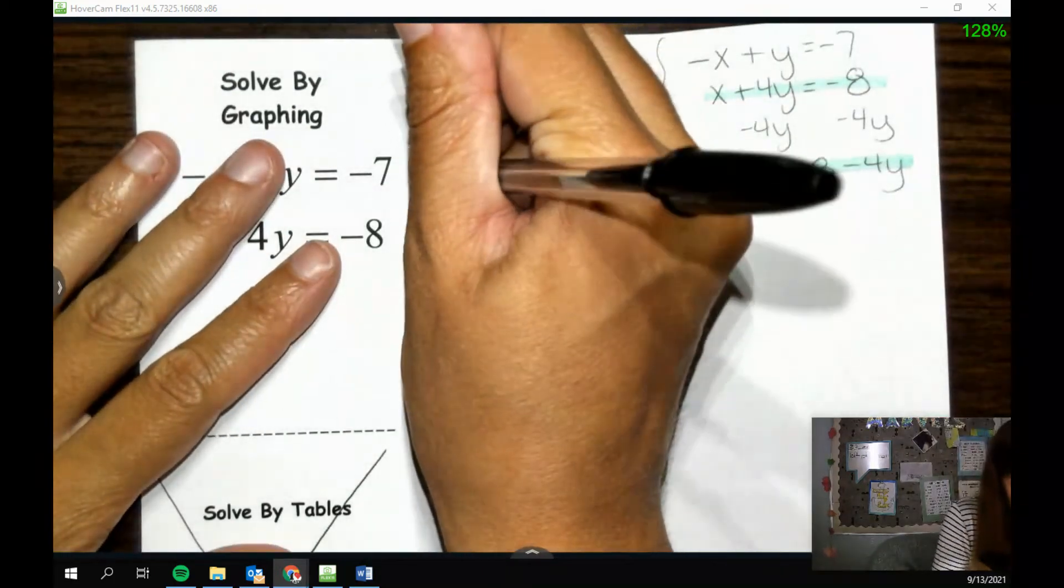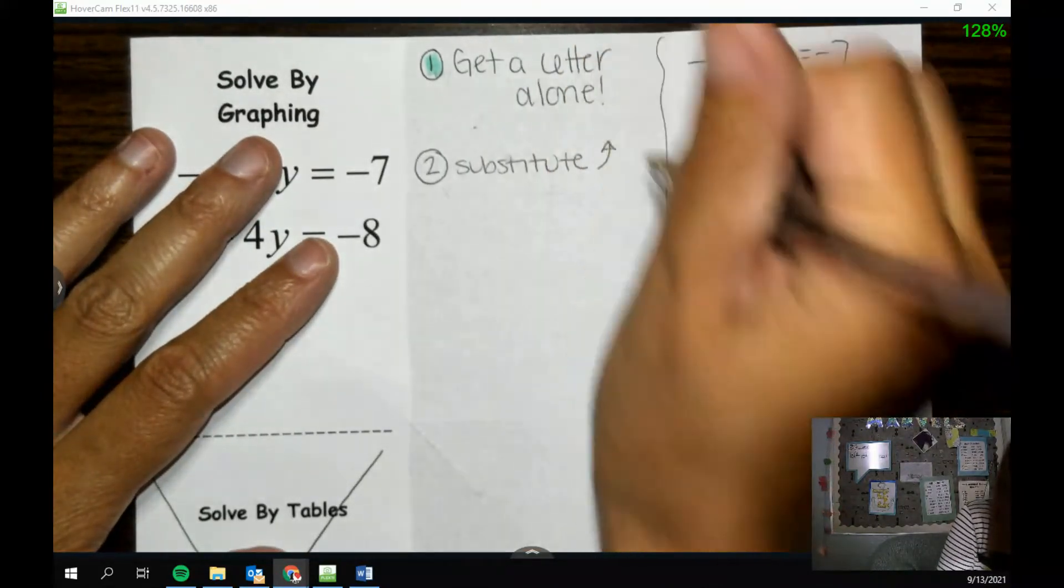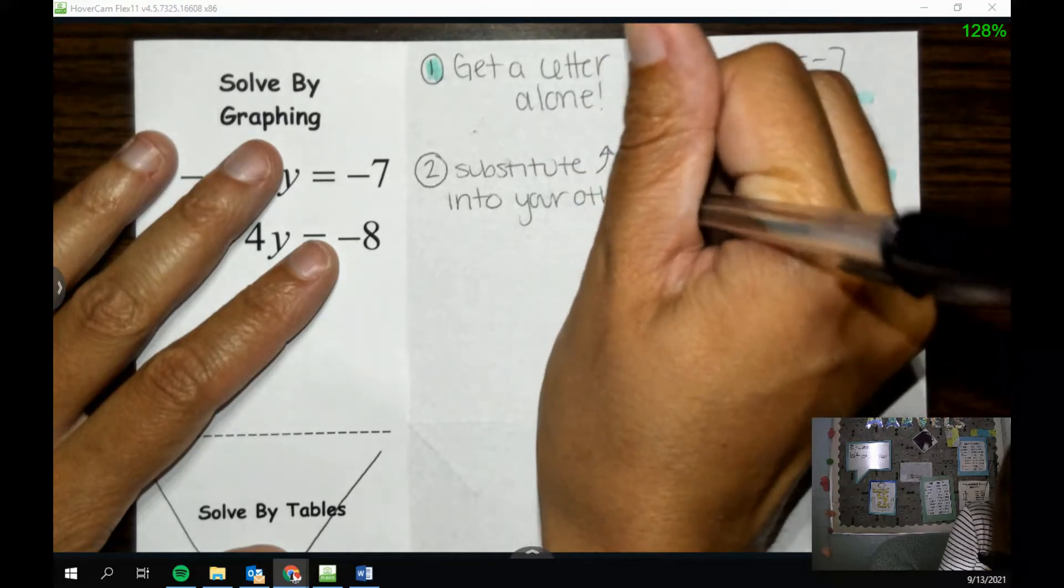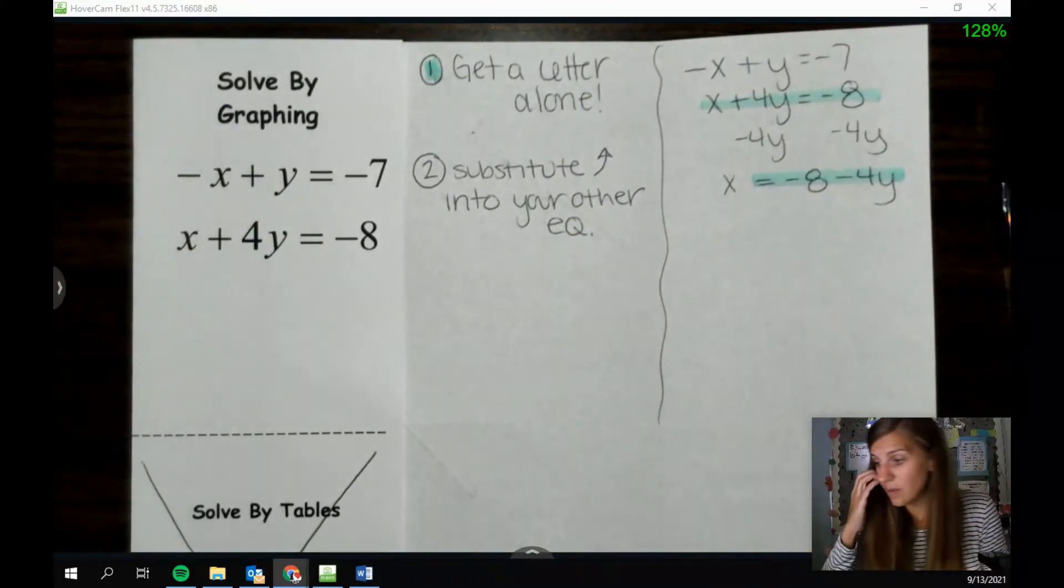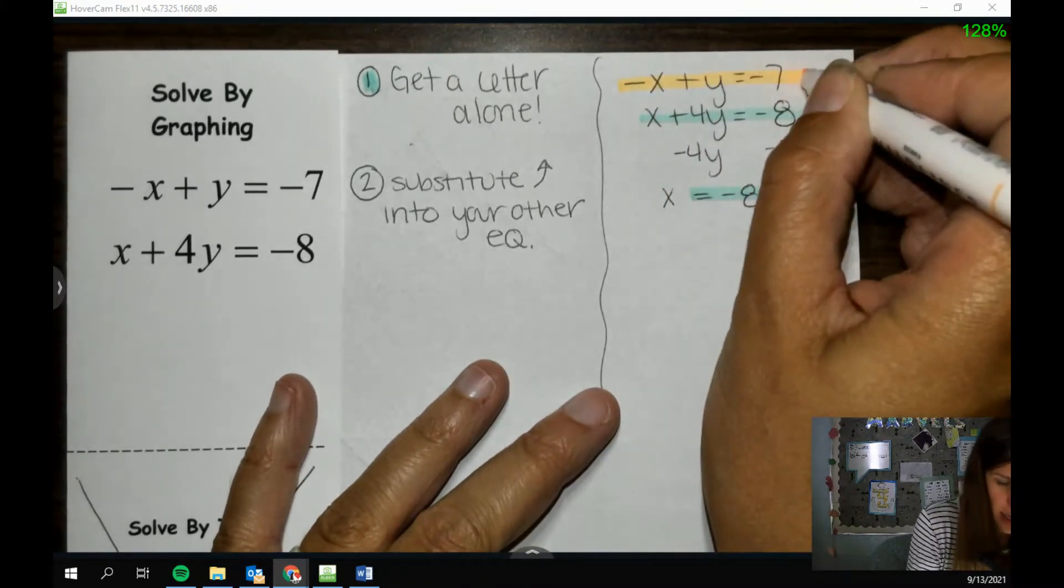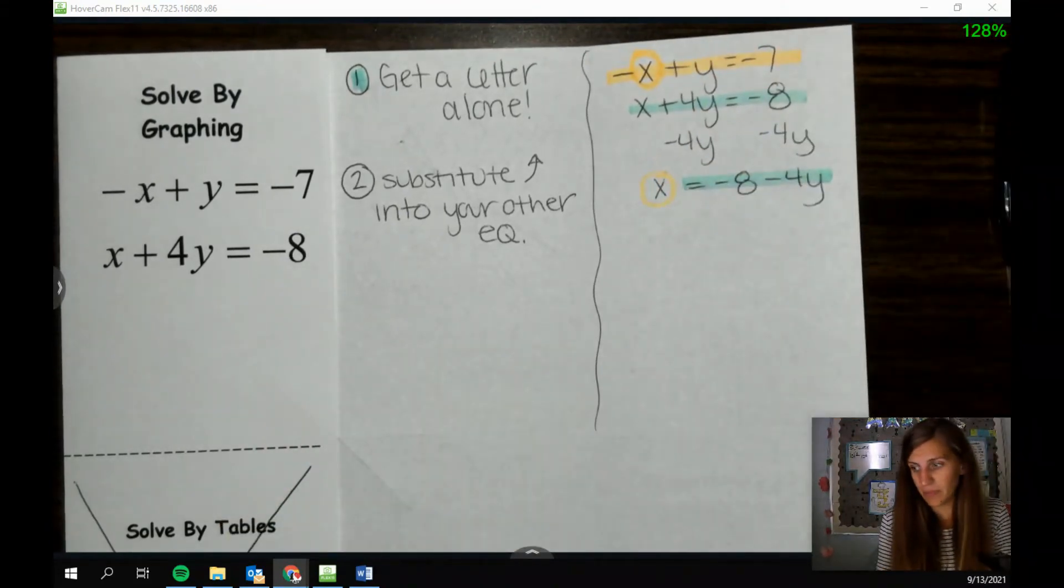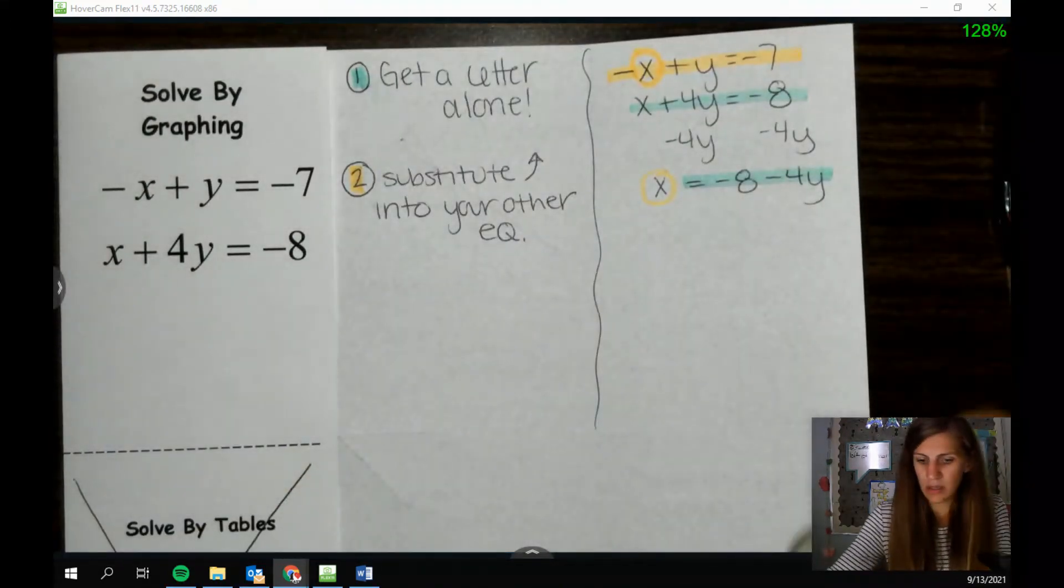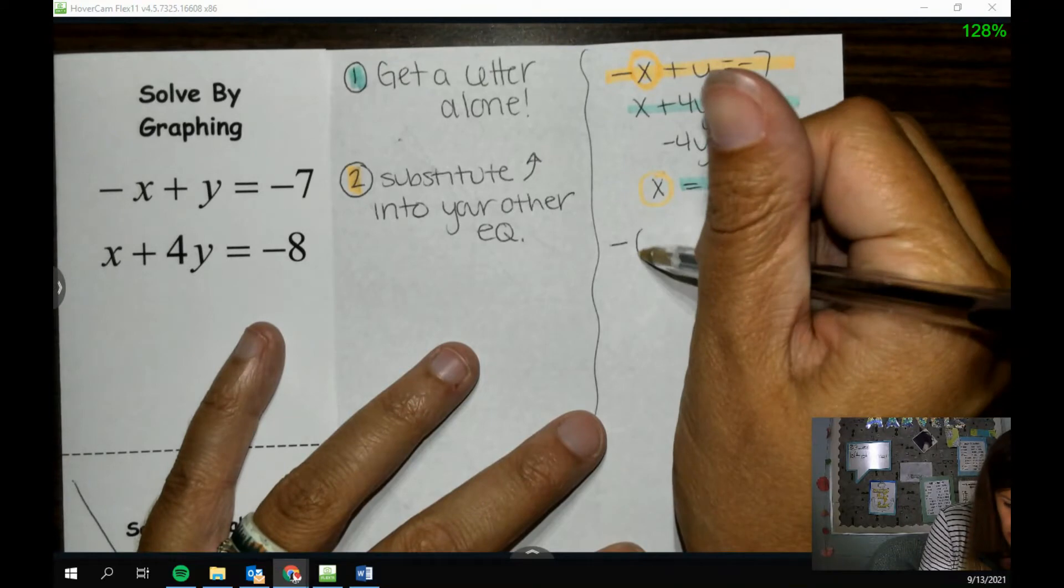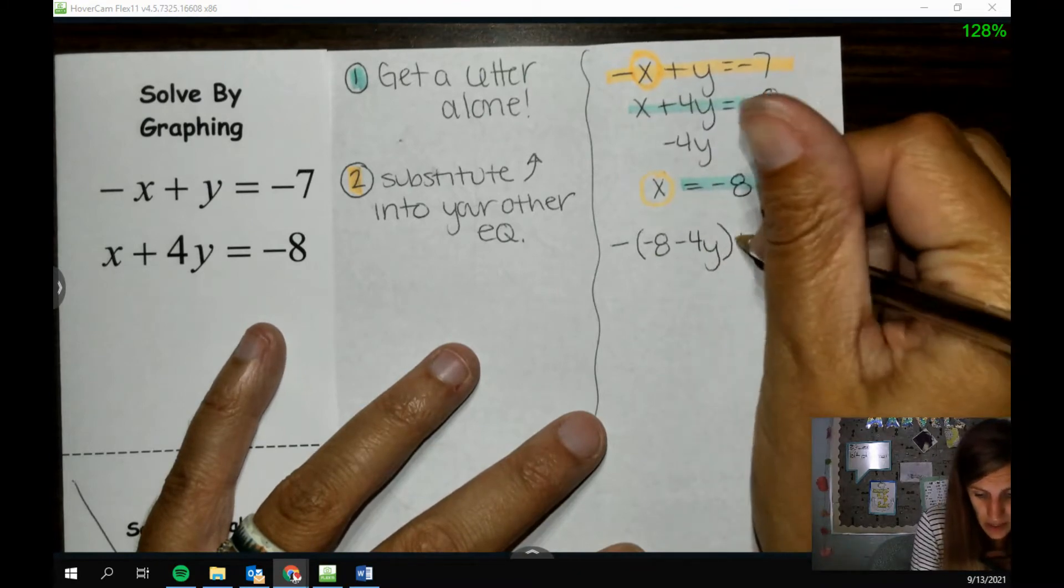So once we have that, we do the substitution part. So step two is we are going to substitute the thing that we just got into the other equation. So this thing that I just got here, I need to put that into my other equation, specifically in place of x, and that's because this is what x is. So step two, we want to substitute. So I take this top equation here, the one I haven't used yet, but in place of x, I'm going to put what it equals. And it's always good to substitute stuff in with parentheses around. And then I finish the equation, so plus y equals negative 7.